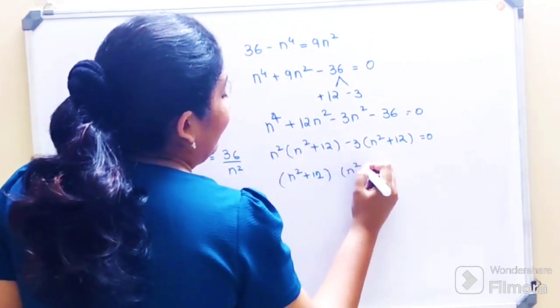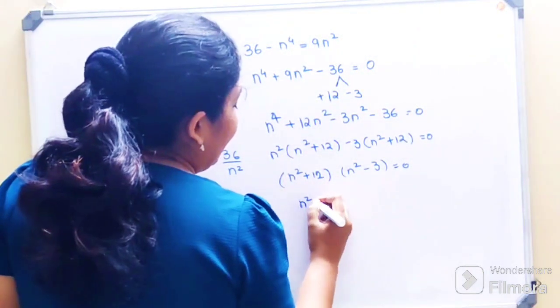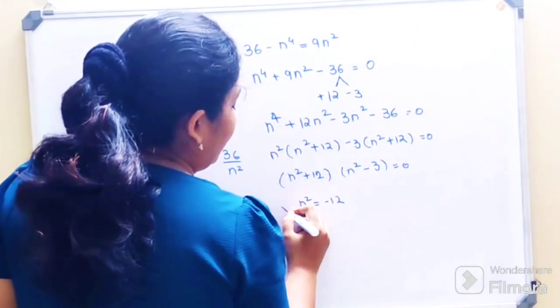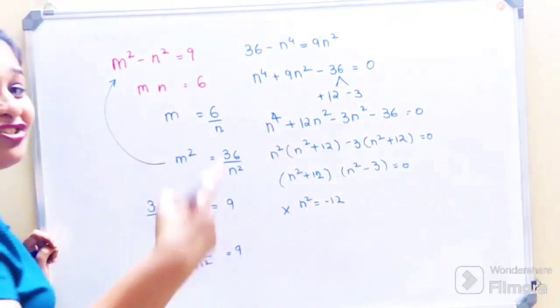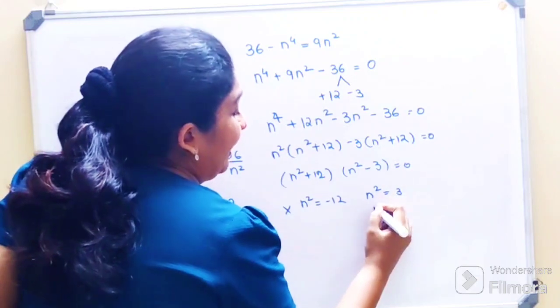Now if you see, n square is equal to minus 12, that is not possible because that gives you imaginary answers. And n square is equal to 3, so n is equal to plus minus root 3.